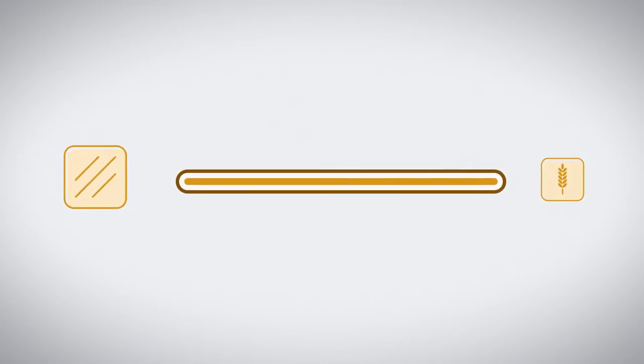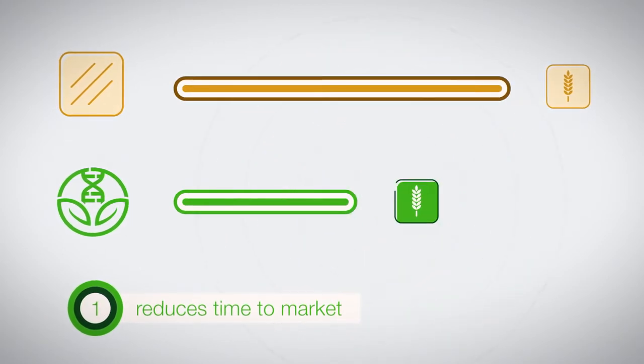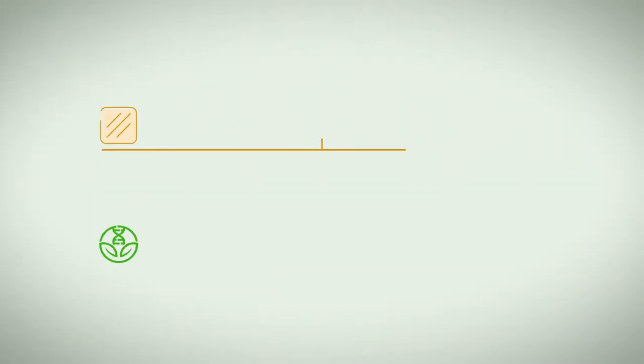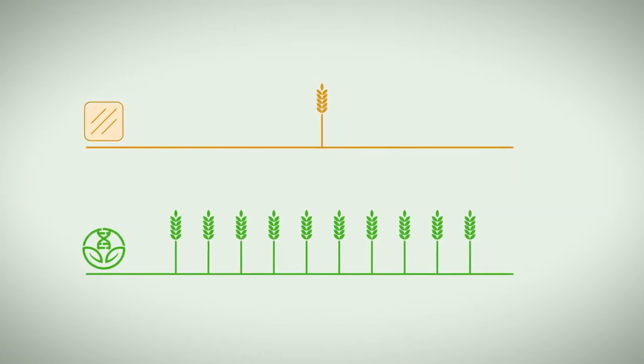Today it takes 8 to 12 years to bring one commercial crop variety to market. XseedScore reduces time to market by 2 to 6 years. Our technology delivers up to 10 times more candidates for commercial evaluation.